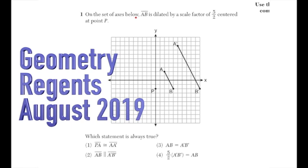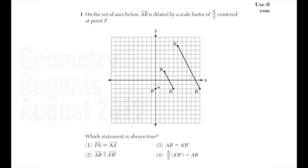Question number one: segment AB is dilated by a scale factor of five halves centered at point P. Which statement is always true? Option one says segment PA is congruent to AA prime, but looking at this, the green segment is much smaller than AA prime, so we can rule that out. If needed, we could use the distance formula, but we'll knock option one off.